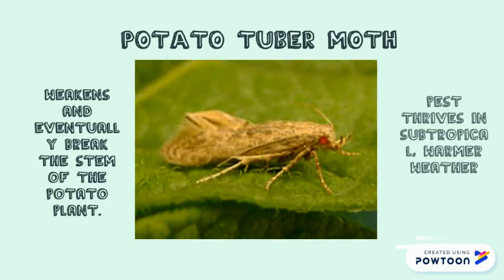A pest that majorly affects potato crops is the potato tuber moth. This pest damages leaves, roots and stems. Mines on leaves are major indicators of the presence of the potato tuber moth. The pest weakens and eventually breaks the stem of the potato plant. Identification of the pest presence is usually only possible by opening up the potato tuber and looking inside. The potato tuber moth has four stages of life: egg, larvae, pupa and adult.